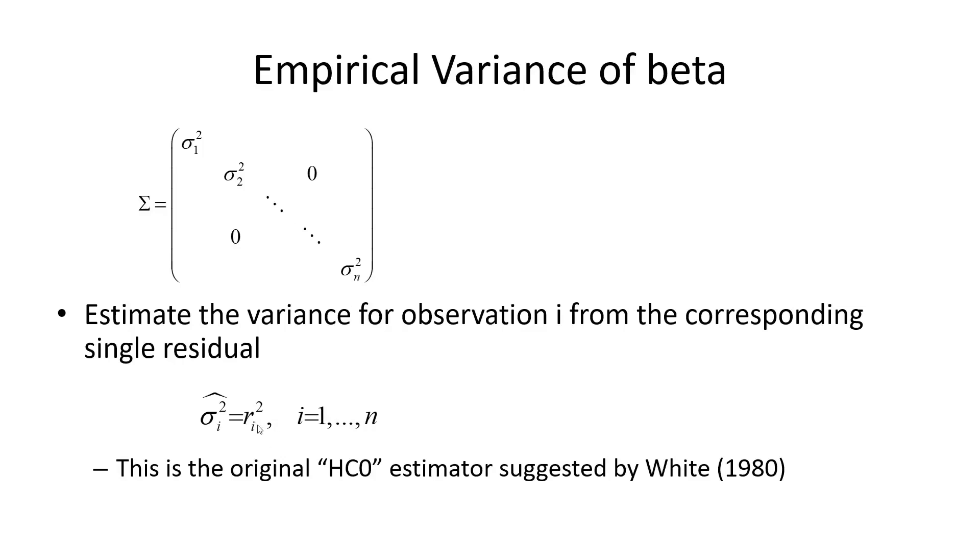And what do you want to divide it by? Well, this one observation, you divide it by one. That would be the intuitive guess, right? And this is indeed the original estimator suggested by White in 1980. It's called the HC0 estimator.